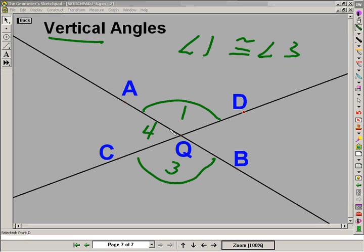Hence, vertical angles are angles that are congruent, and they are across from each other, formed by intersecting lines. So if angle 1 is the same as angle 3, for the same reasoning, angle 2 would be the same as angle 4.